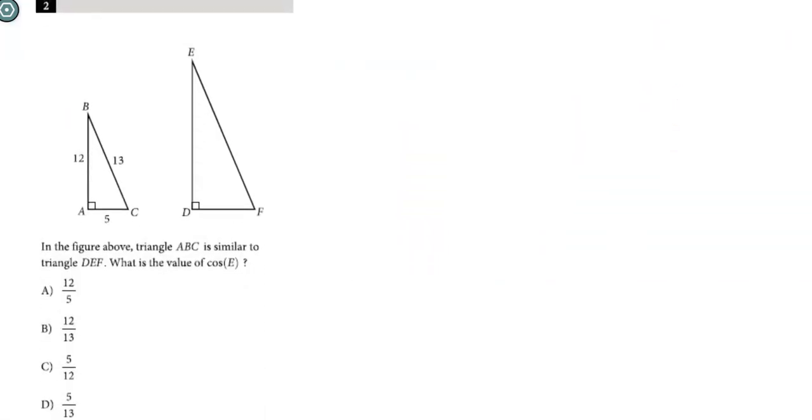Alright, number 2. Looks like we have a Pythagorean triple here. We have our 5, 12, 13. And then we have some triangle to the right that's scaled up. But it says that they're similar to each other. So what is the value of the cosine of E?